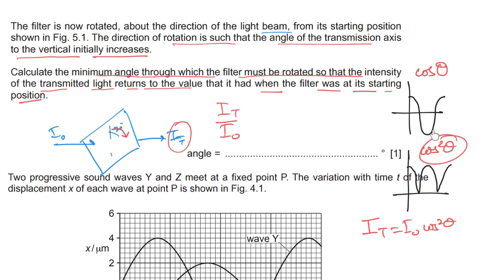In the cos-squared graph, the negative parts of cosine are reflected upward, so the graph repeats more frequently. At 20 degrees we have a certain value. We want to find the next angle that gives the same value. Since cos equals zero at 90 degrees, there is a gap of 70 between 20 and 90, and the same gap of 70 after 90 gives the next matching point at 160 degrees. So the filter is rotated from 20 degrees to 160 degrees — a rotation of 160 minus 20, which equals 140 degrees.